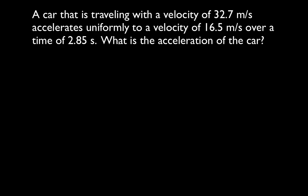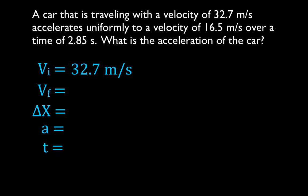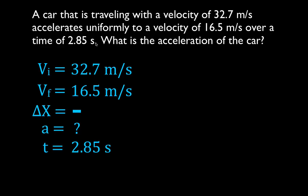The first step to solving these problems is to write down all five of the kinematic variables — get in the habit: initial velocity, final velocity, change in position, acceleration, and time. Write down what you know. The car is traveling with a velocity of 32.7 meters per second — that's our initial velocity. 16.5 is our final velocity. The time over which that occurs is 2.85 seconds. We're trying to find the acceleration, and we're not given the change in position. We have three variables and we're solving for the fourth.